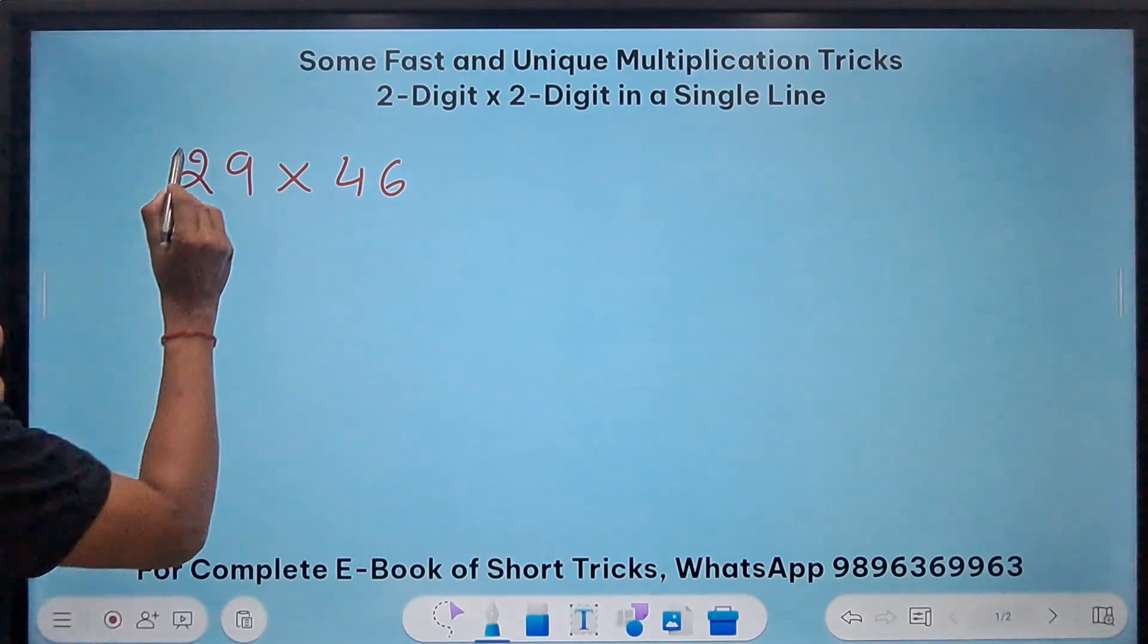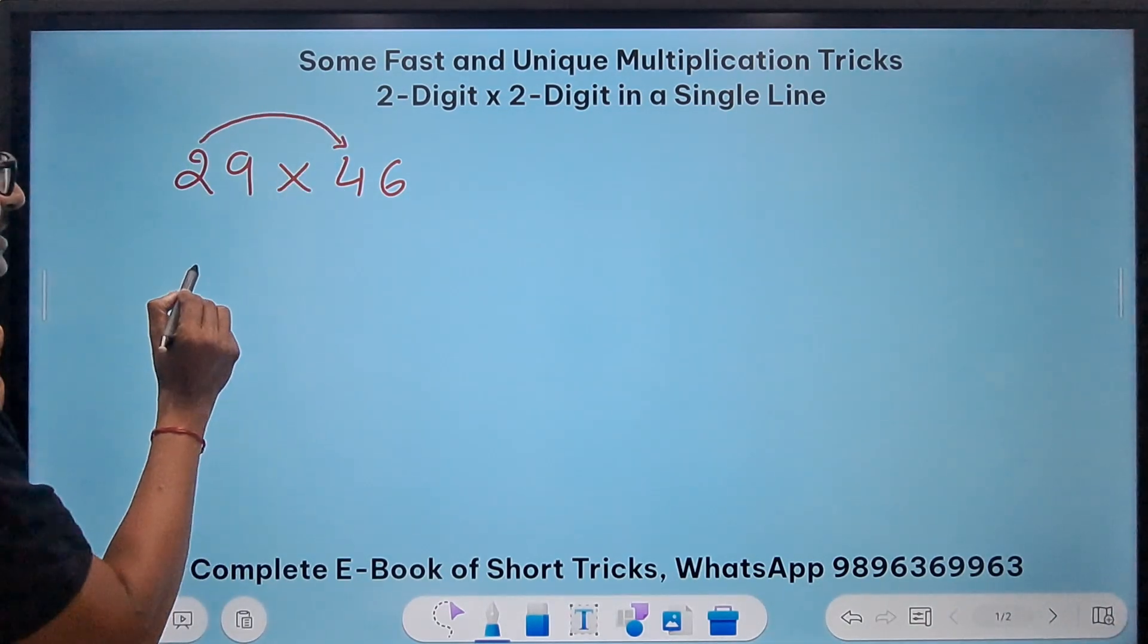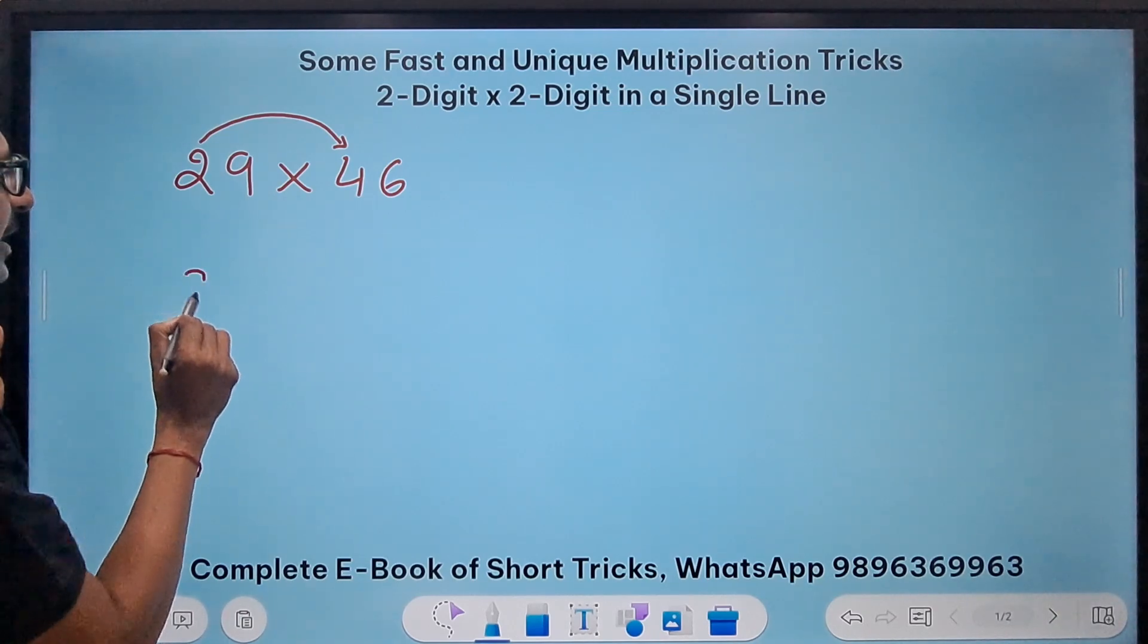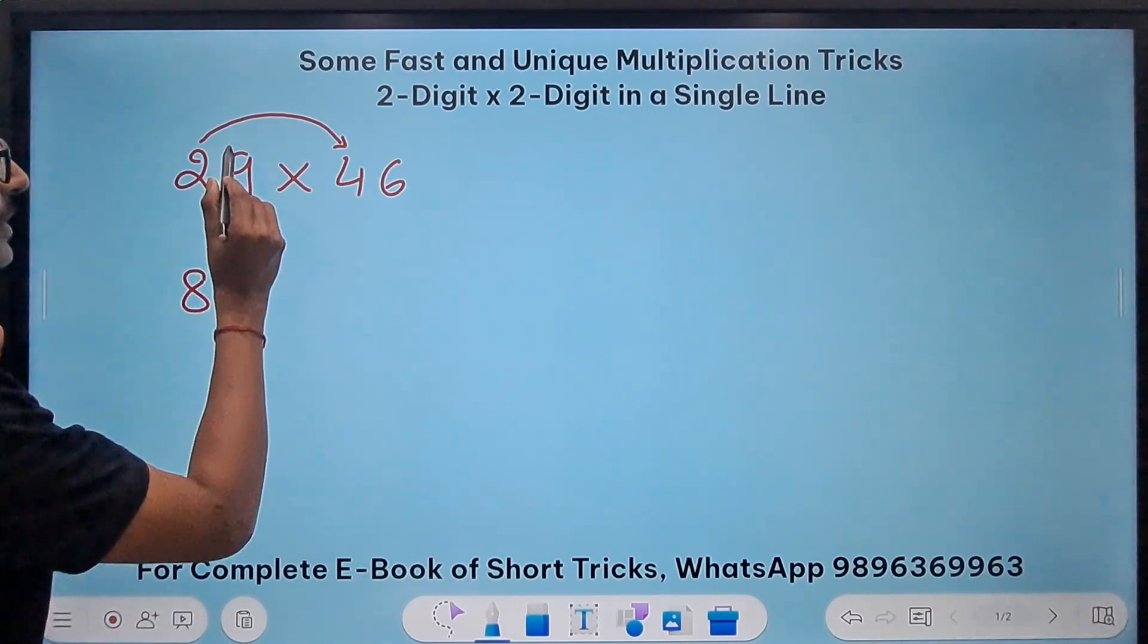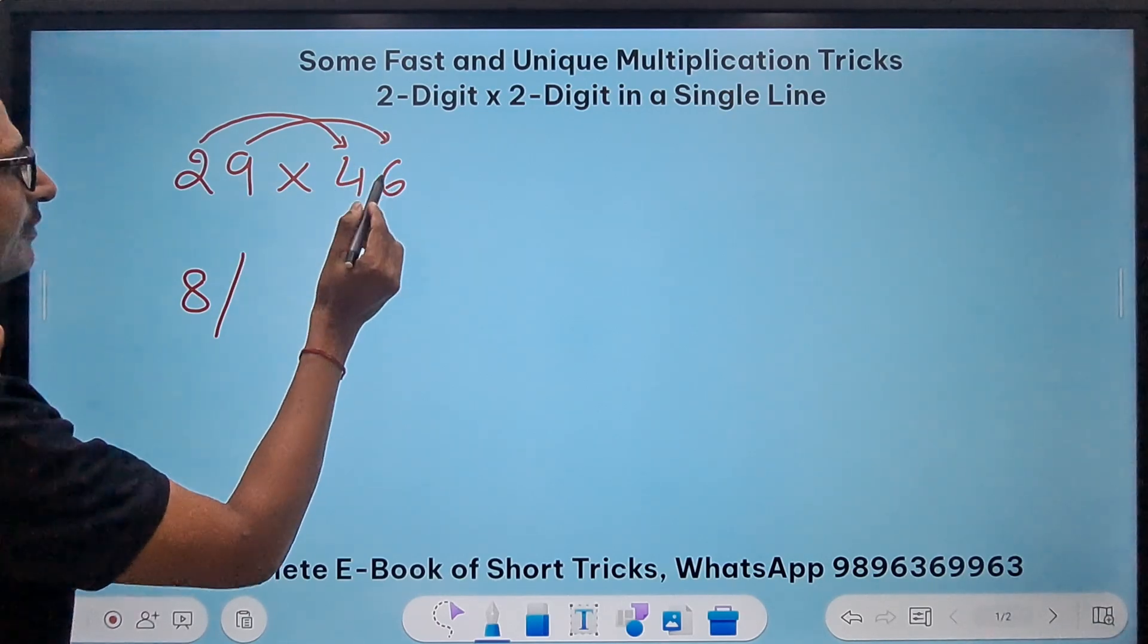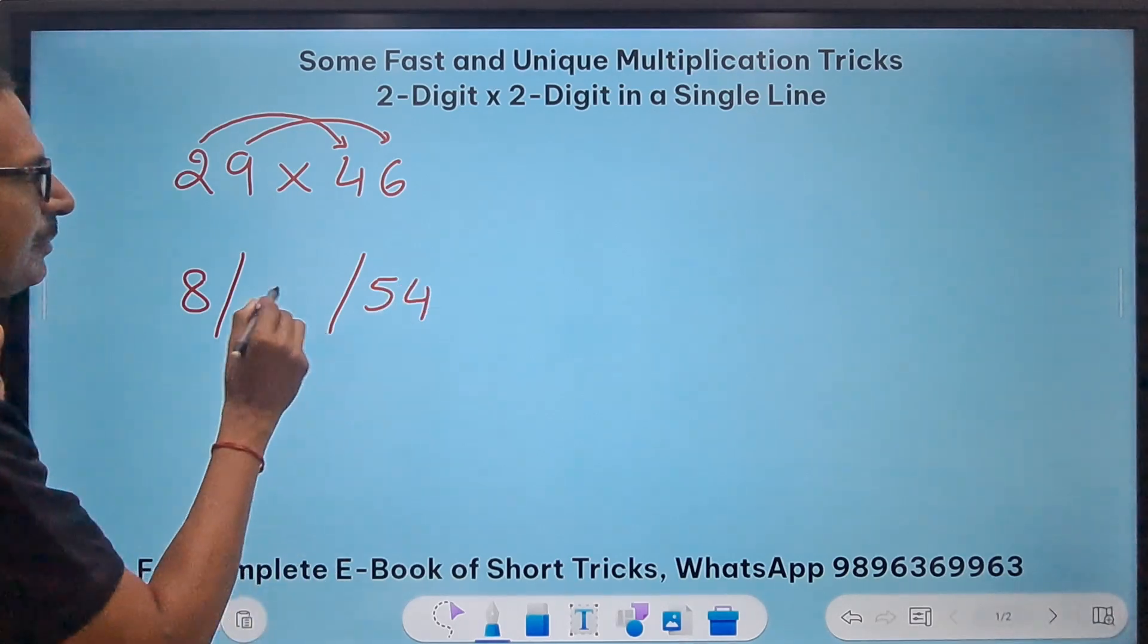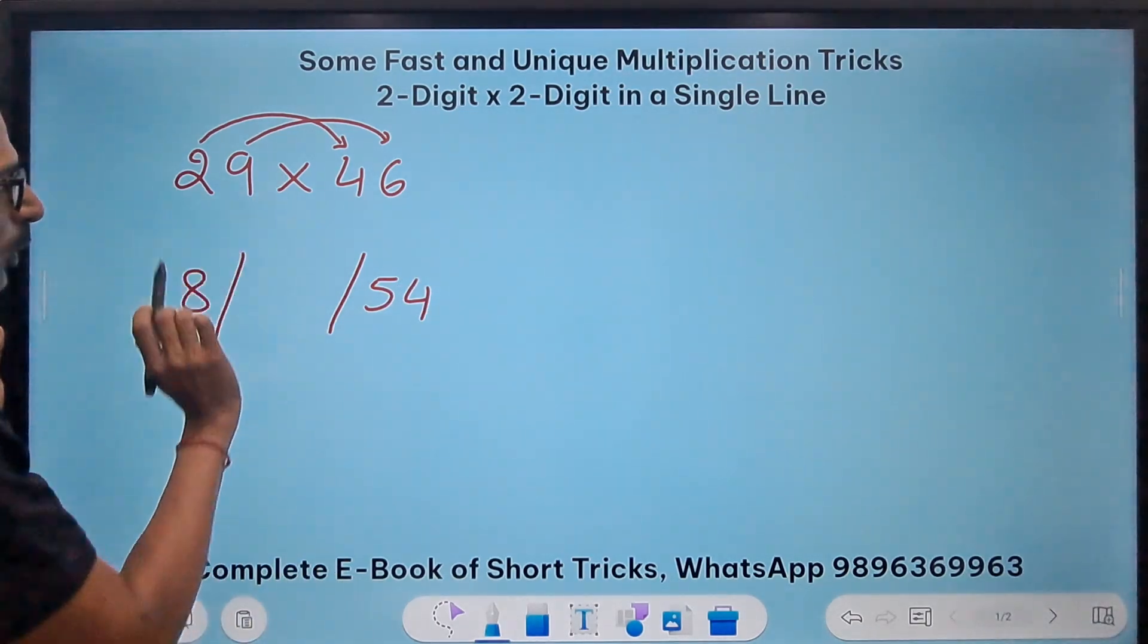Now without doing that there is a pattern which you can follow and get to your answer directly. Now the first digit with the first digit gives you 2 times 4 which is 8. So I'll write 8 here. Then the second digit with the second digit gets me a 9, 6, 54 which I will write on the extreme right and in the middle that is important now.